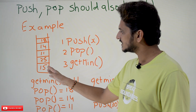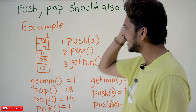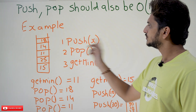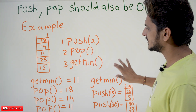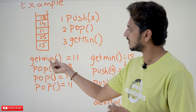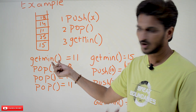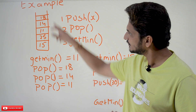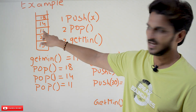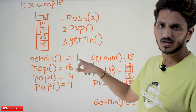With an example we will understand it better. Assume that this is the stack: 15, 25, 11, 14, and 18. We have push, pop, and get min operations. If you call the get min function, what is the minimum element in this stack? 11. So your output should be 11.